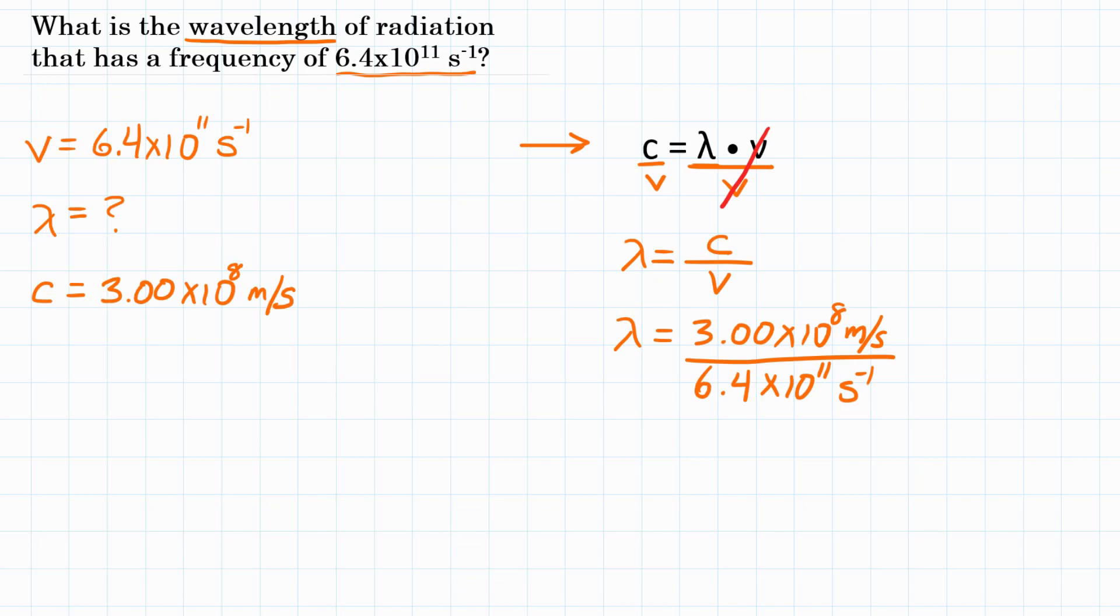Let's look at our units first. Does anything cancel out? Well, on top we have 1 over seconds or per second. And on the bottom we have seconds to the negative 1, which is saying the same thing. So on top and on bottom, those will cancel out. And we will be left with meters, which is what we are looking for.